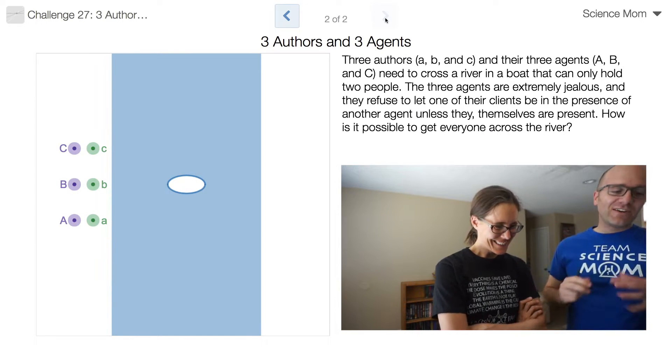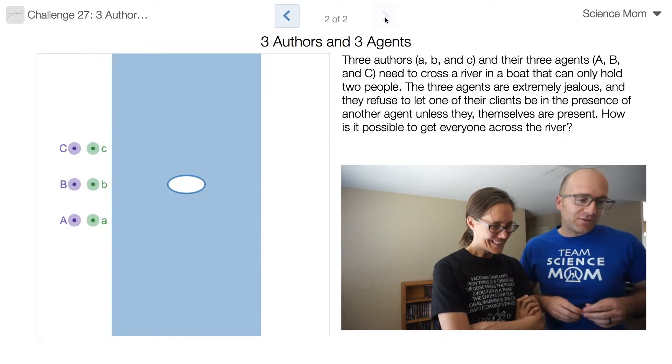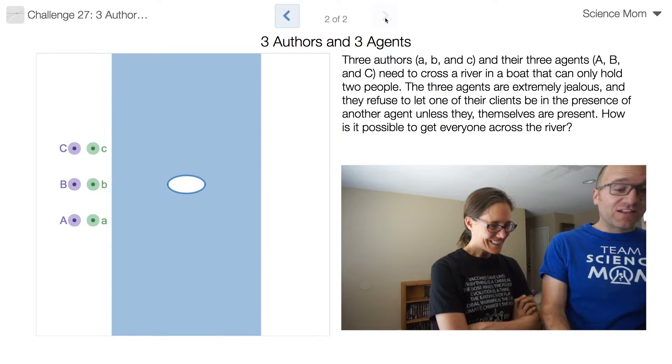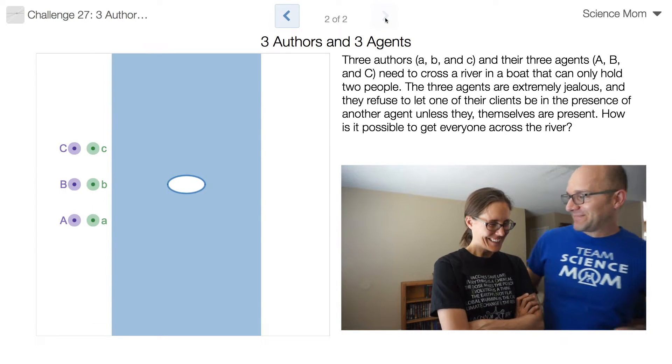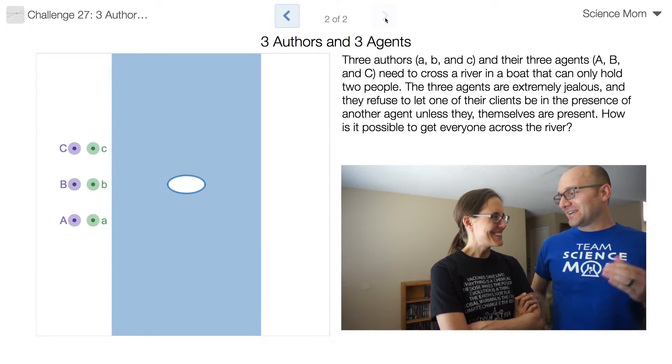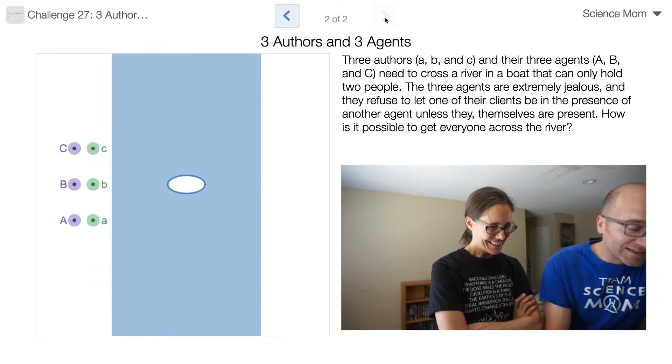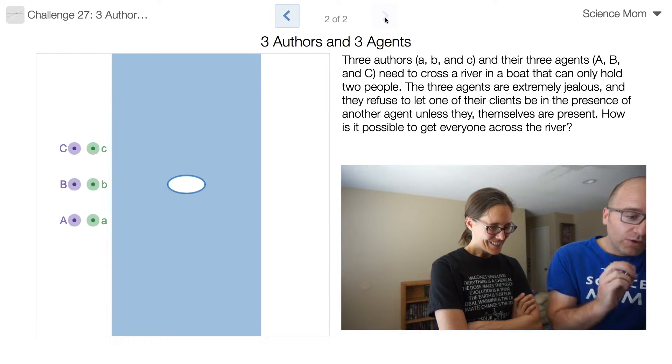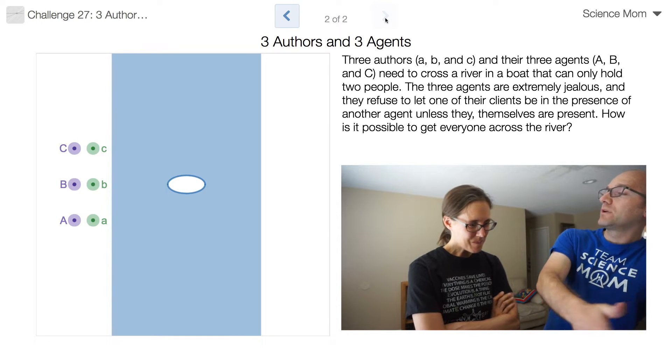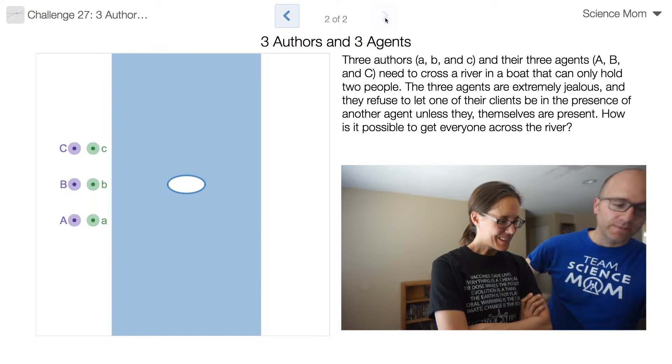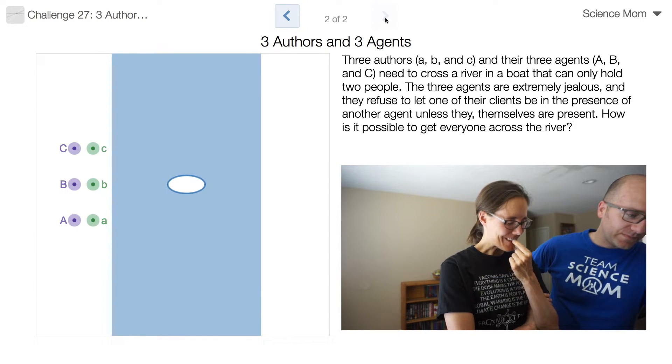And they've got three very jealous agents with the corresponding letters, so the capital letters. So the agents refuse to let one of their clients be in the presence of another agent unless they themselves are present. Because agents are very possessive of their clients. That's right. So the question is, if we allow two people to cross at the same time and no more than two, how can we get everyone across without the agent's heads exploding? The agents are the purple ones? Yeah, that's right. And the authors should leave the case. Okay. Yes.